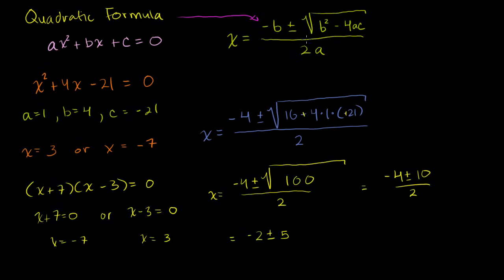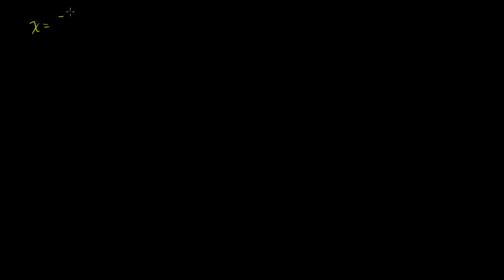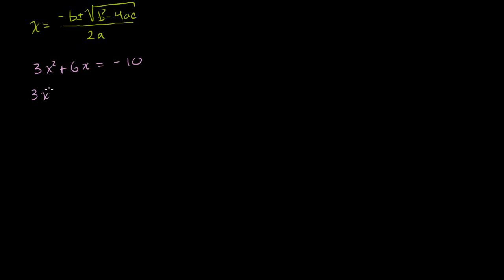You might say, why bother with this crazy mess? The reason we want to bother is it'll also work for problems that are hard to factor. Let's do some hard-to-factor problems now. Let's rewrite the formula: x = (−b ± √(b² − 4ac)) / 2a. Now let's apply this to another problem. Let's say we have 3x² + 6x = −10. The first thing we want to do is get it in standard form, so let's add 10 to both sides: 3x² + 6x + 10 = 0.